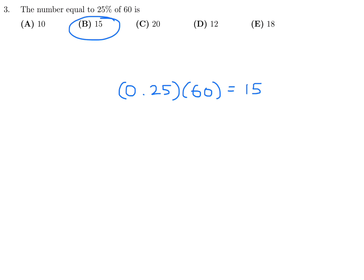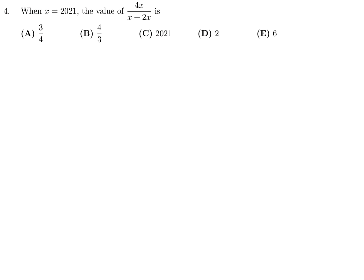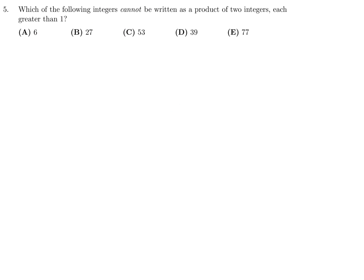When x equals 2021, the value of 4x over x plus 2x is: 4x over x plus 2x, well the denominator is just 3x, and then the x is canceled so you just get 4 over 3. It didn't matter what x was, so this was not even needed to be placed into the expression. Number 4, the answer is B.